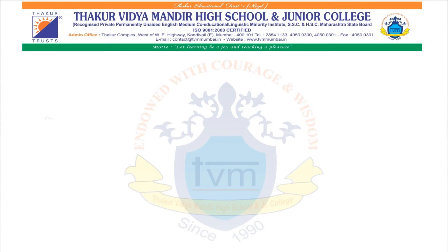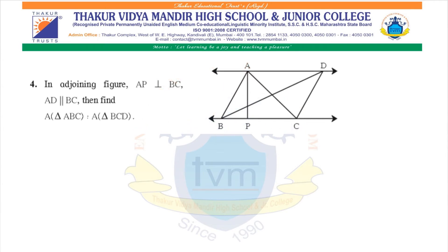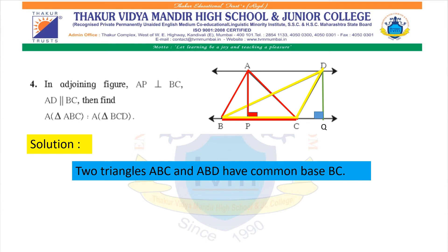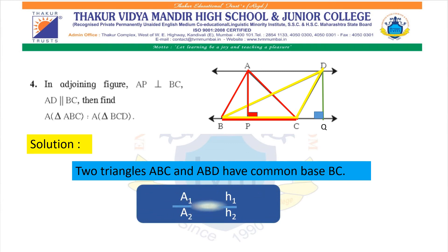Now let us solve sum number 4 of exercise 1.1. If you see the diagram, we have two triangles — triangle ABC and triangle DCB. Triangle ABC is colored red, and triangle DBC is yellow. For triangle DBC, which is an obtuse angle triangle, taking BC as the base, the height DQ is drawn from vertex D. For triangle ABC, with base BC, AP is the height. So the two triangles have common base BC, and we will use A1 upon A2 equals H1 upon H2.